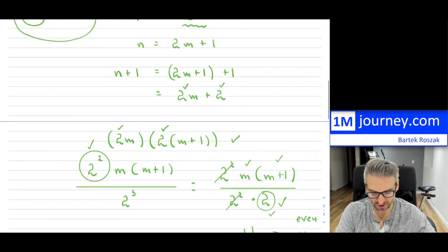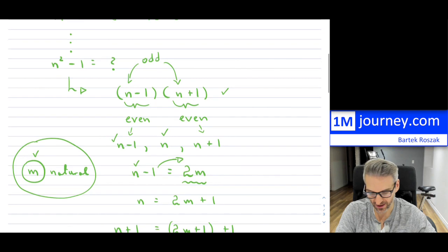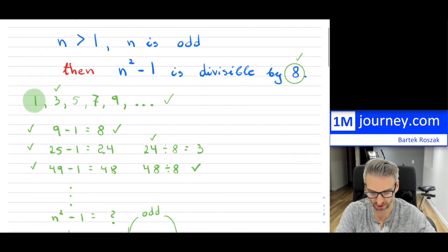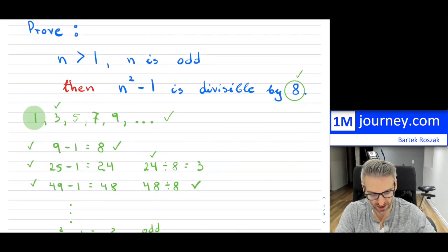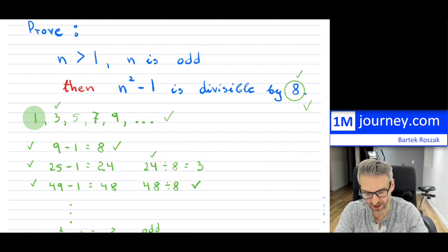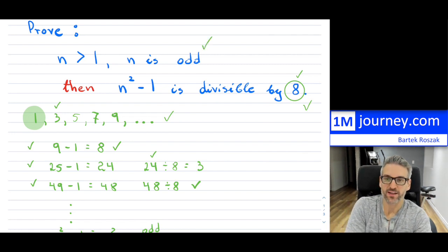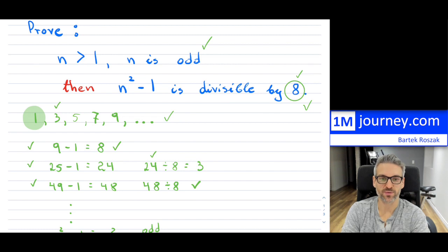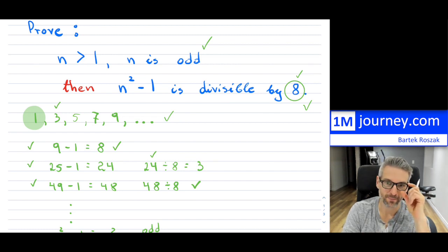So here is a little bit of a proof for this. I didn't use induction or anything. I just simply showed it. So it's interesting that if you take an odd number, you square it and you subtract 1 from it, it's always going to be divisible by 8.